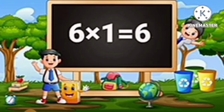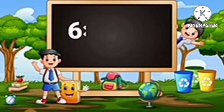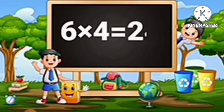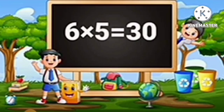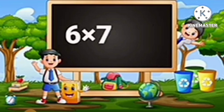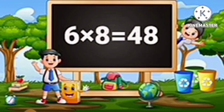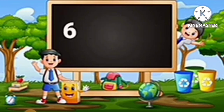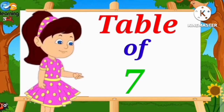Table of 6: 6 ones are 6, 6 twos are 12, 6 threes are 18, 6 fours are 24, 6 fives are 30, 6 sixes are 36, 6 sevens are 42, 6 eights are 48, 6 nines are 54, 6 tens are 60.